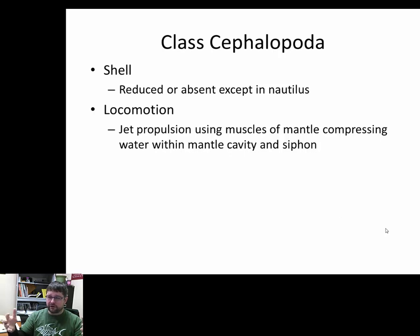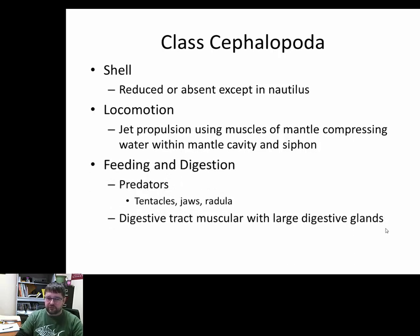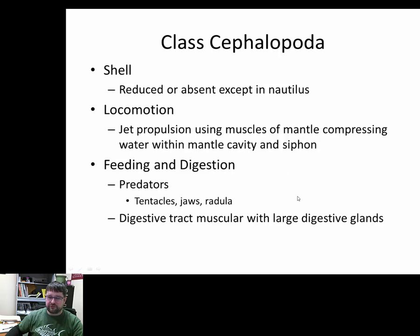Jet propulsion means water is sucked into the siphon into the mantle cavity and then pressed out through the siphon as a water jet. The muscular mantle flexes and compresses to move the animal through the water. These are predators with tentacles; some species have specialized feeding tentacles for different purposes. Their jaws are a beak made of modified shell material, with a radula — a rasping tongue with cartilage — to rasp away flesh for digestion.